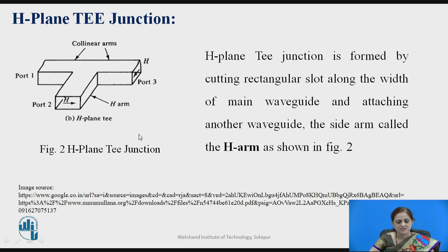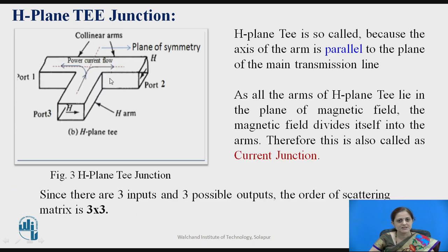H-Plane T-Junction is formed by cutting a rectangular slot along the width of the main waveguide and attaching another waveguide, also known as the side arm or H-Arm, as shown in this figure. It has port 1, port 2, and port 3. H-Plane T-Junction is so called because the axis of the arm is parallel to the plane of the main transmission line. As all arms lie in the plane of the magnetic field, the magnetic field divides itself into the arms, and therefore this is also called the current junction.